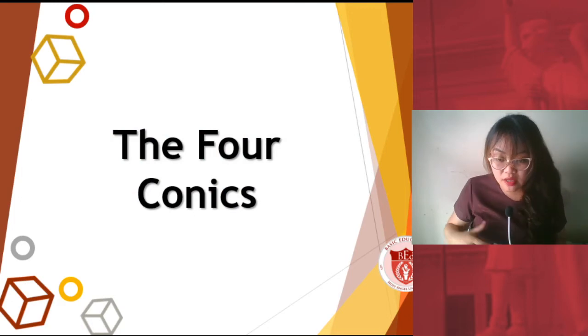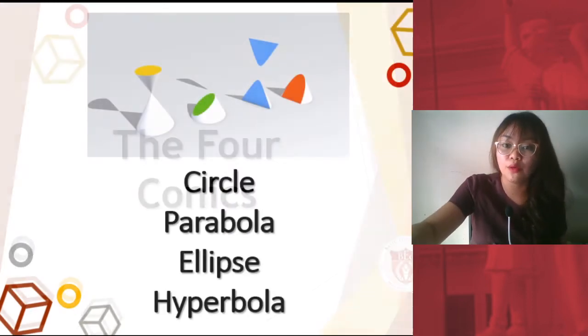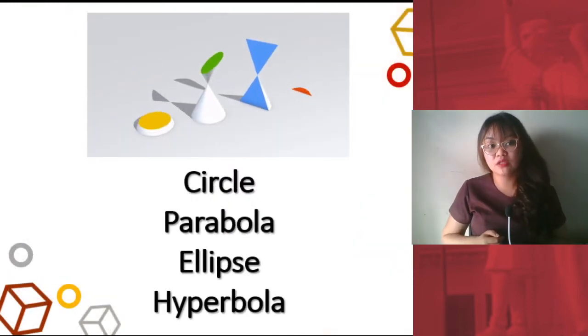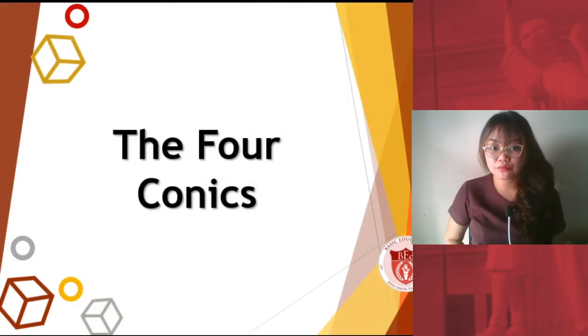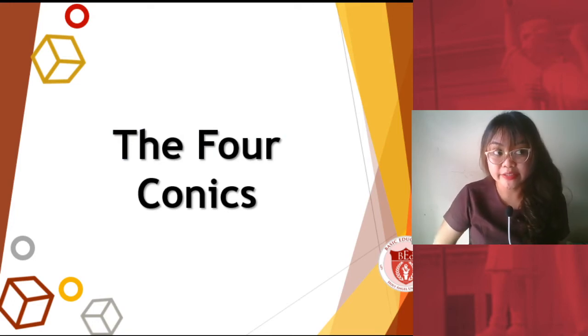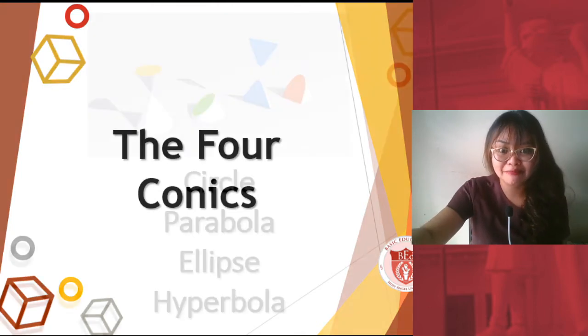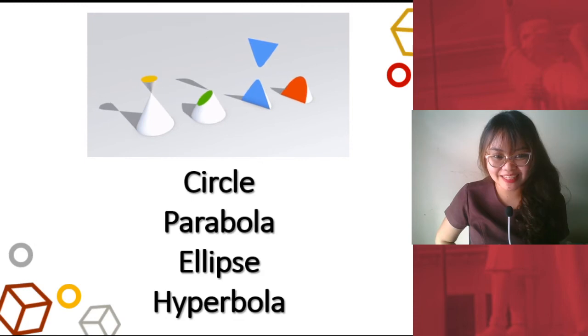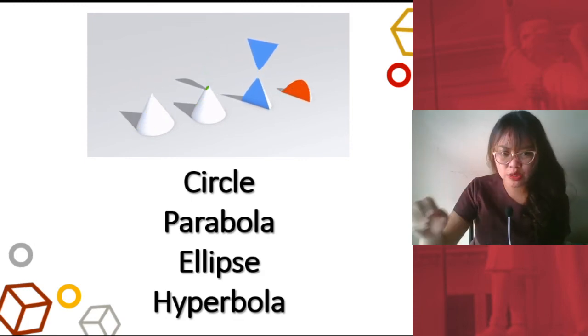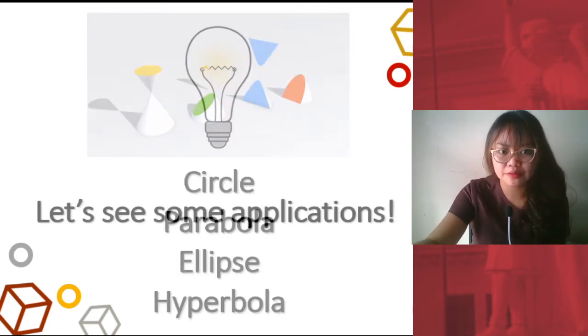So, the four conics, as we've enumerated a while ago, we have the circle, parabola, ellipse, and hyperbola. Again, the four conics. Say you were able to repeat them. They are circle, parabola, ellipse, and hyperbola. Very good! You can do this.